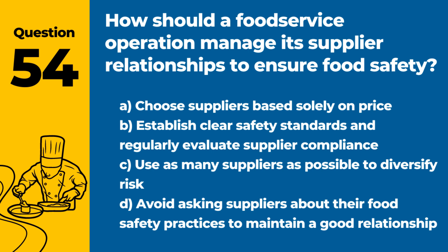Question 54. How should a food service operation manage its supplier relationships to ensure food safety? Answer: B. Establish clear safety standards and regularly evaluate supplier compliance. Careful selection and monitoring of suppliers are vital for ensuring the safety of sourced food.